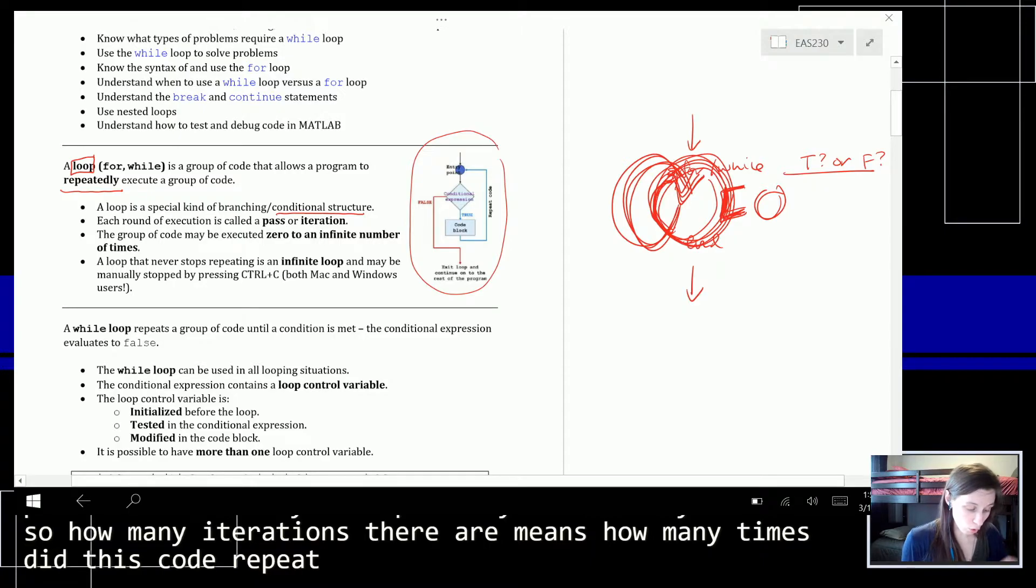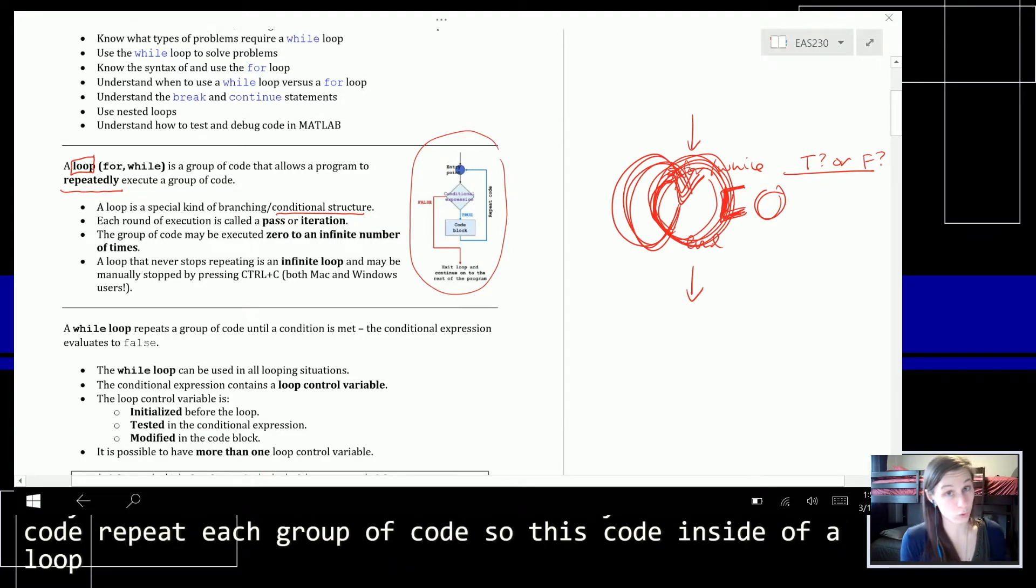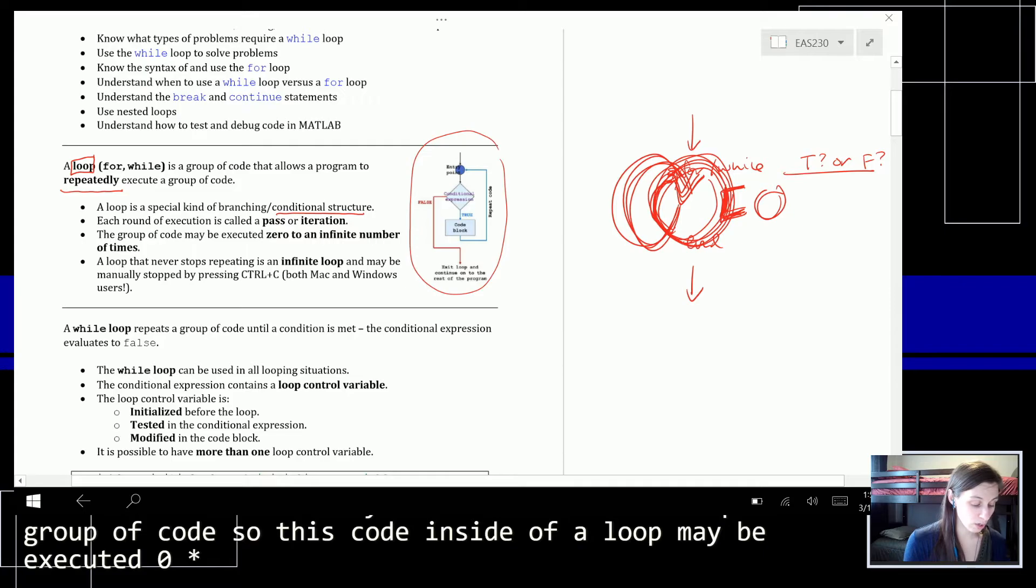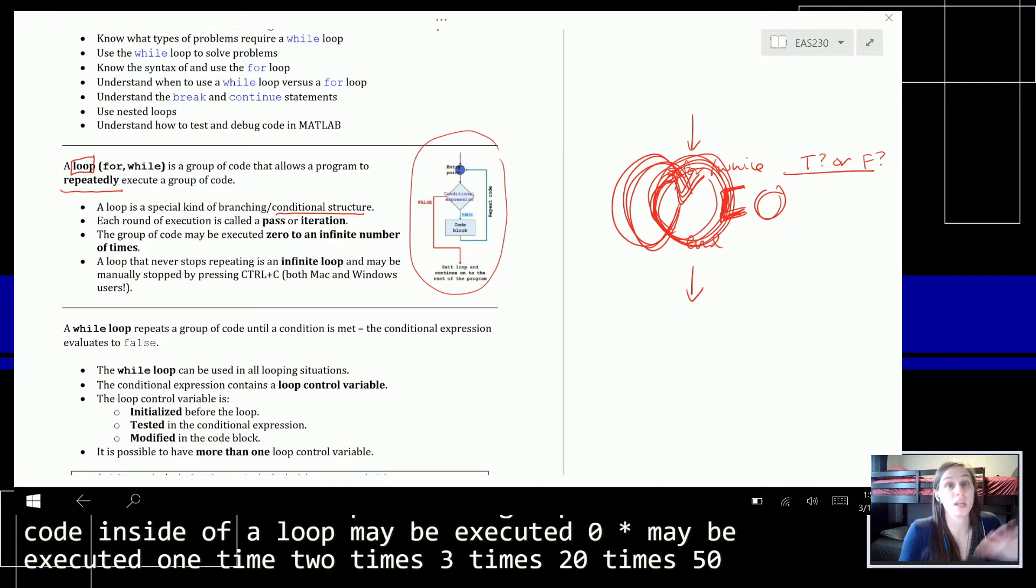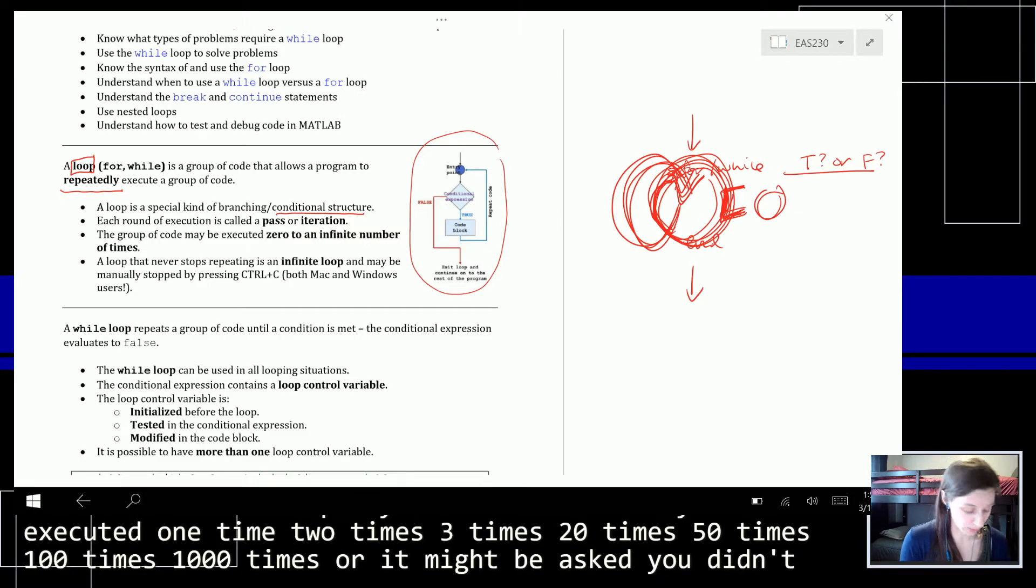Each group of code, so this code inside of a loop, may be executed zero times, maybe executed one time, two times, three times, twenty times, fifty times, a hundred times, thousand times, or it might be executed an infinite number of times.